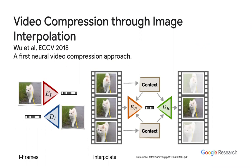When we talk about video, things get very complicated because you are not dealing with 2D data — you are dealing with volumes. When you deal with volumes, the number of methods that become available increases dramatically. One of the first papers in this area introduced a bit of neural video compression. It used methods designed for things like motion estimation, computing terms like residuals — deviating from a prediction — which is a very stateful method.